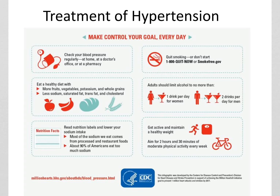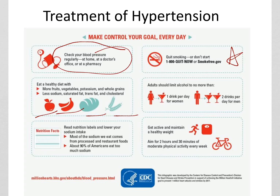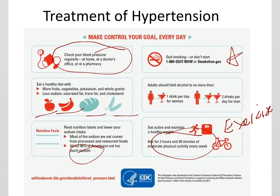Treatment is pretty straightforward: monitor blood pressure routinely, quit smoking, eat fruits, vegetables, and whole grains, reduce sodium, saturated fats, and sugars, limit alcohol consumption, and increase exercise and physical activity. Being knowledgeable — for instance, about too much sodium — matters. These are straightforward because we know if you do these things blood pressure will come down, but they're hard lifestyle changes to implement.